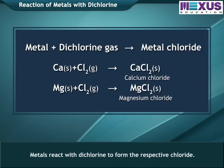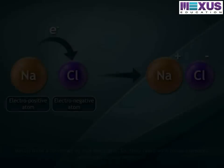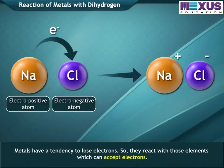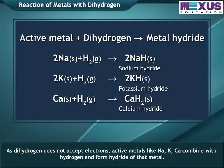Metals react with dichlorine to form their respective chlorides. They react with those elements which can accept electrons. As dihydrogen does not accept electrons, active metals like sodium, potassium, and calcium combine with hydrogen and form hydrides of that metal.